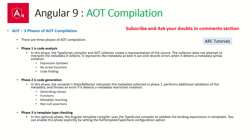In Phase 1, it does not attempt any interpretation — it only collects the details of the metadata. Metadata here is the @Component, @Injectable, @Pipe decorators — it collects all the metadata information and analyzes it. It will flag basic things like expression syntax issues, no arrow functions, no code folding, etc.